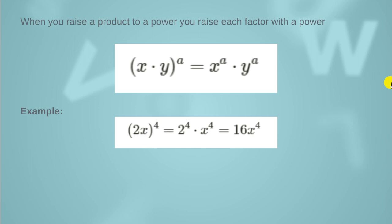In another example, we have the product of 2 and x, so we have 2x raised to the power 4. Here 2 and x are two separate things, so we write it as 2 raised to the power 4 multiplied by x raised to the power 4. Since 2 raised to the power 4 gives us 16, we get 16 multiplied by x raised to the power 4.